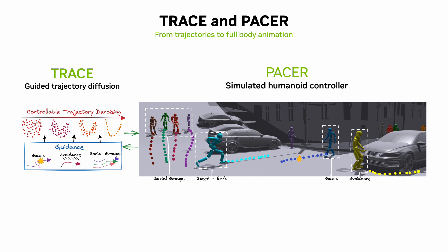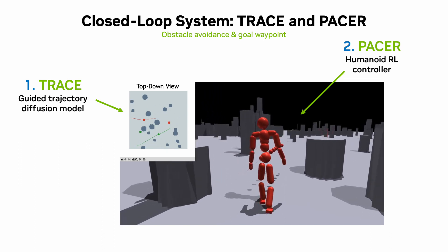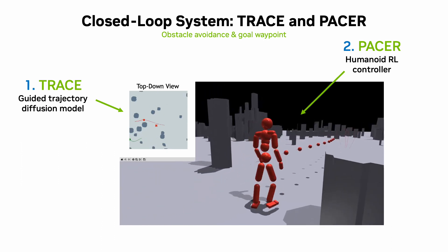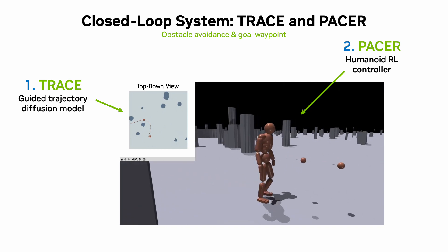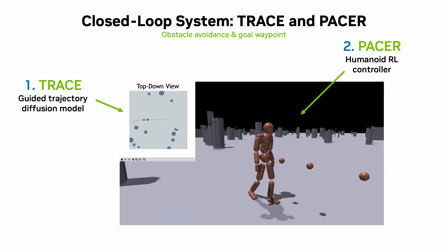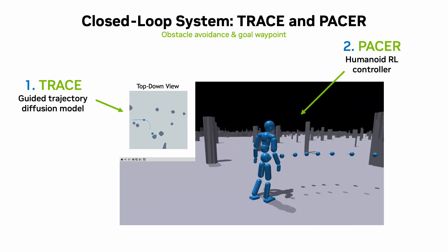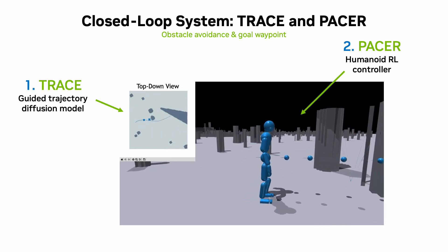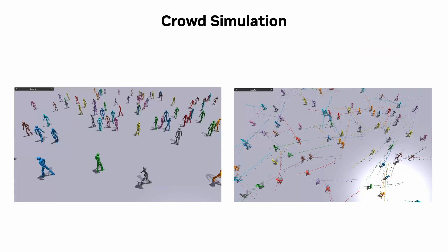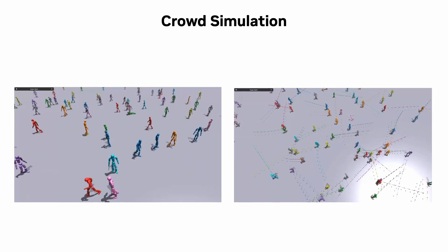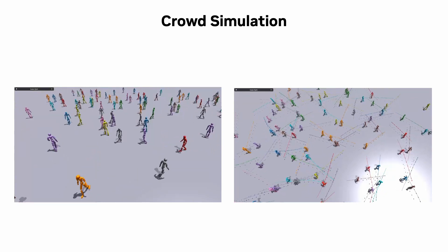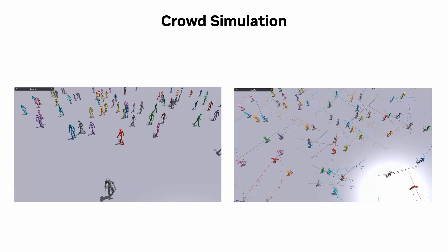Bringing things all together, Trace can produce realistic pedestrian trajectories that meet user constraints, and Pacer can follow these trajectories with a physics-based humanoid character. This forms a closed-loop pedestrian animation system useful for many applications. In these examples, Trace uses diffusion guidance to plan trajectories that avoid obstacles while going to a goal waypoint, and Pacer carries out these trajectories successfully on the full humanoid system. The system can also simulate dense crowds of 100 pedestrians. Characters move realistically and are for the most part able to avoid collisions with each other, thanks to guidance in Trace as well as the interaction awareness of the Pacer model.